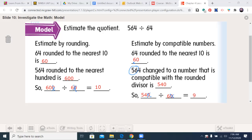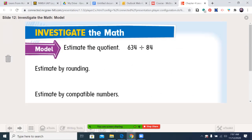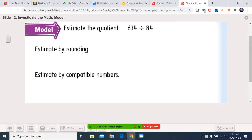So you have 1 way gives you a 10. 1 way gives you a 9. Both are pretty easily done in your head. And neither would be considered wrong. So let's move forward. And you see that their answers did the same thing. So let's look at it this way. Estimate the quotient. 634 divided by 84.